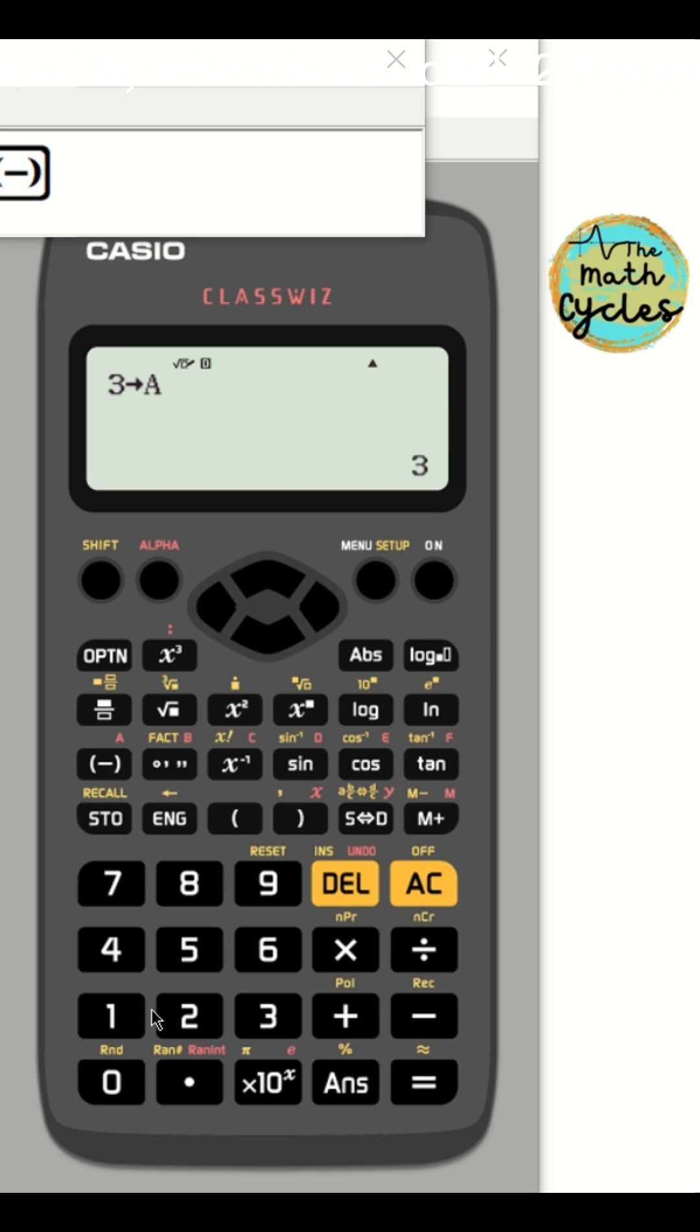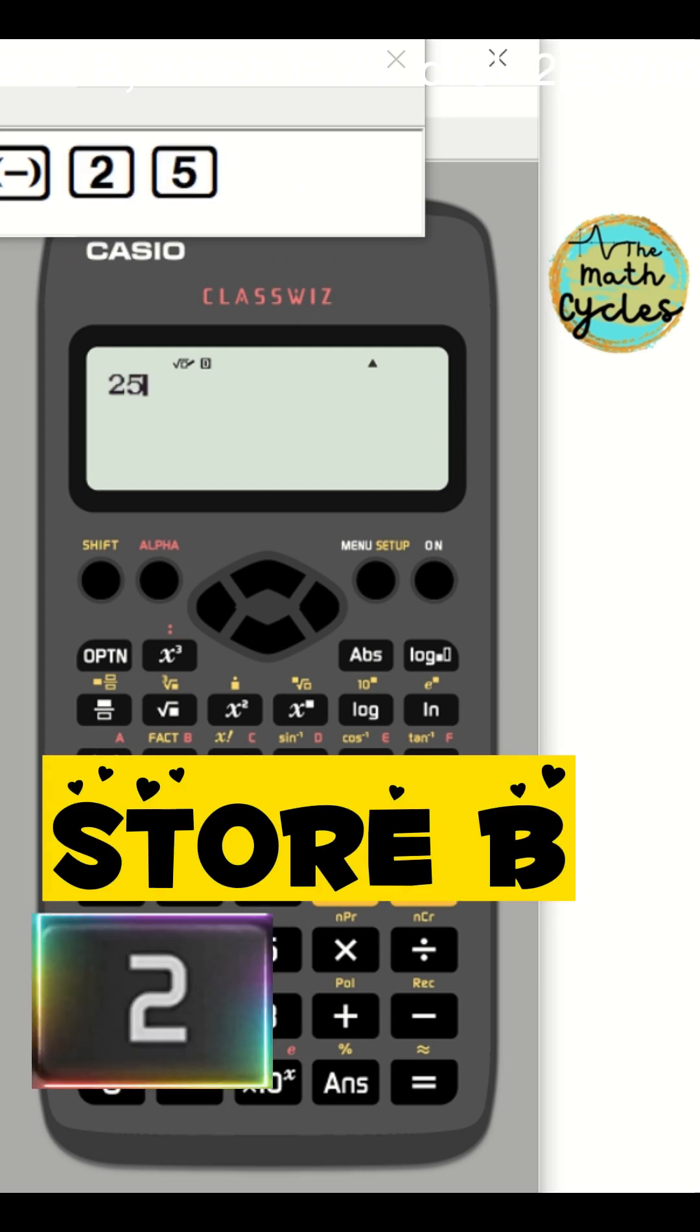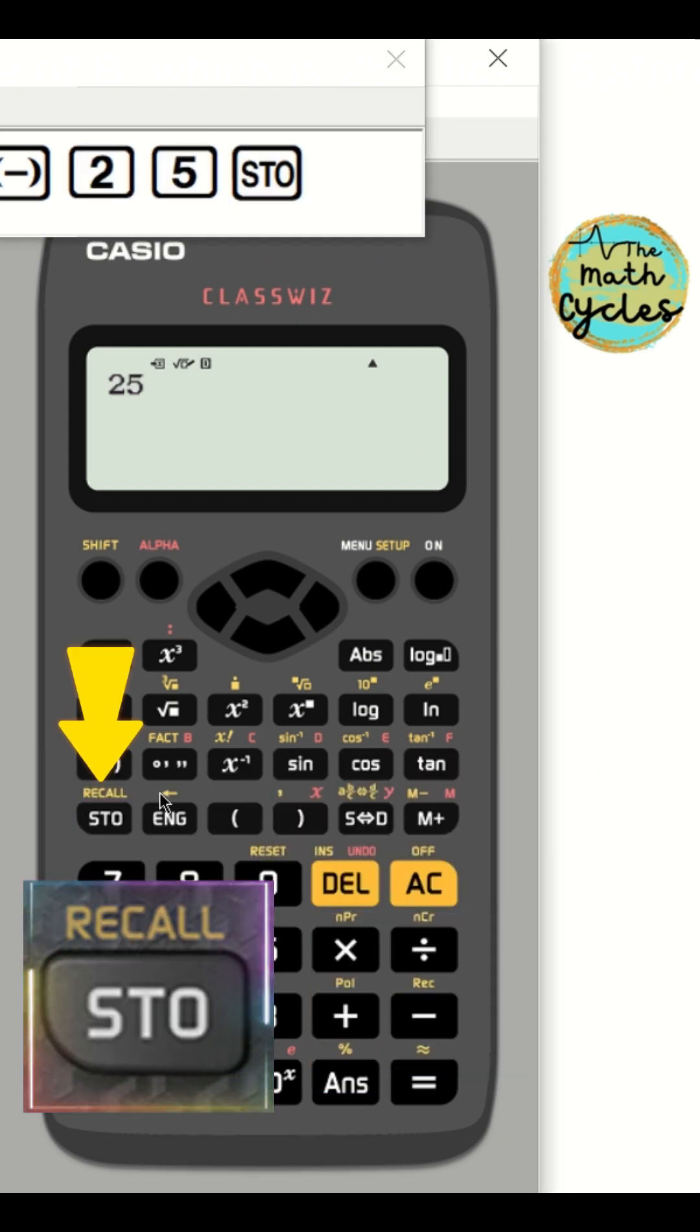Now, store the value of B, which is 25. Click 2, 5, store key, then this key.